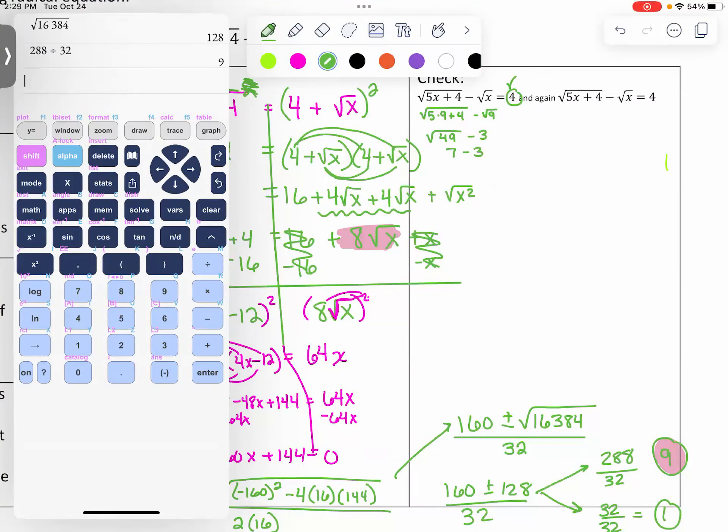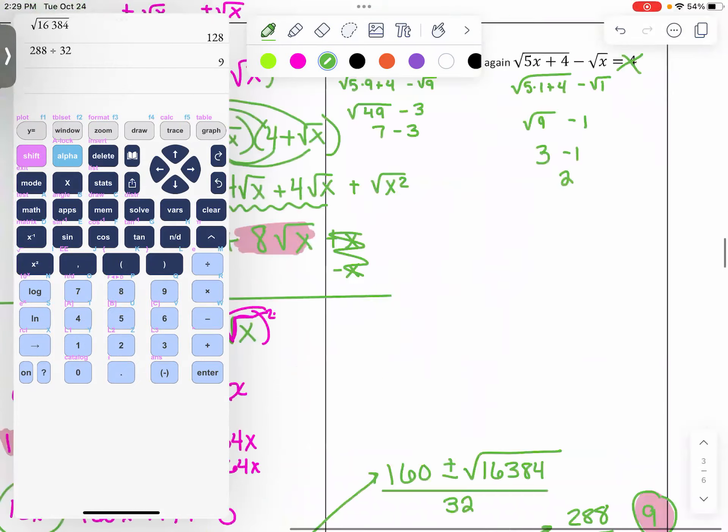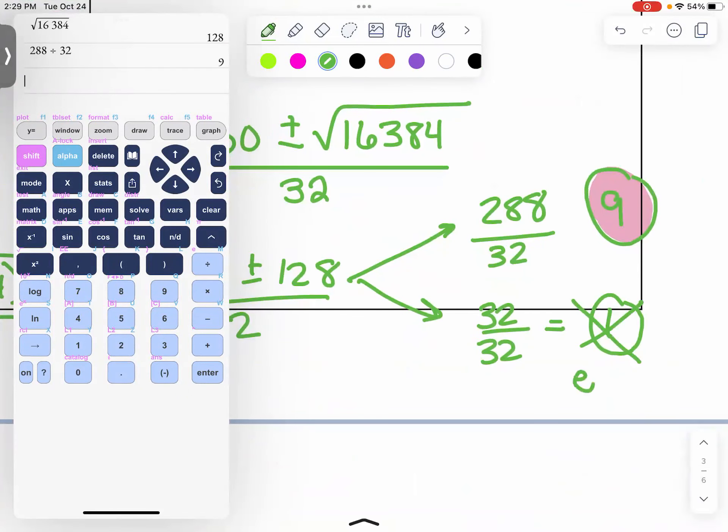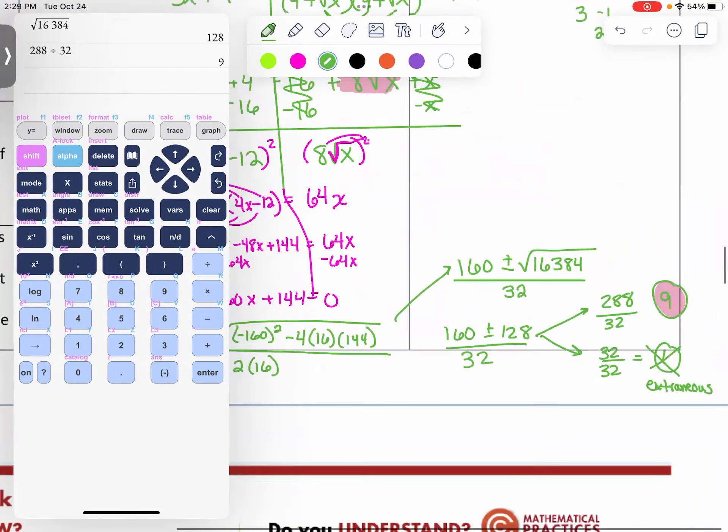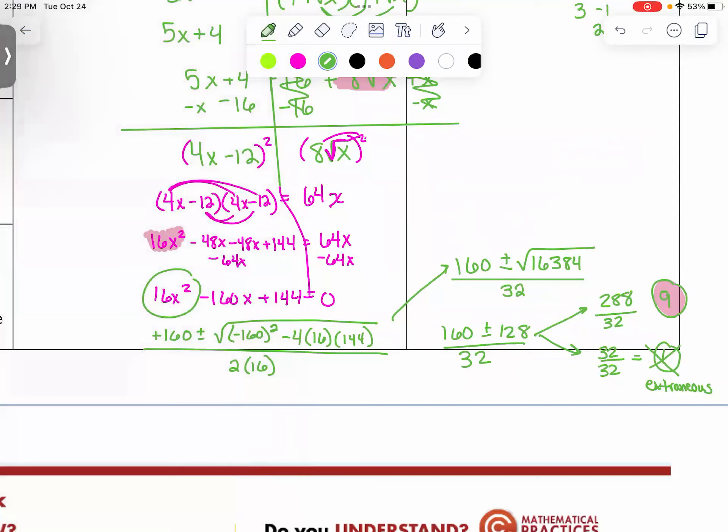And let's check in 1. 5 times 1 is 5. Plus 4 is 9. Which is 3. Minus the square root of, we're checking in 1. So, minus 1 is 2. So, what that means, it's not 4, that it is extraneous. So, we're going to put this over it and we're going to use the word extraneous. Extraneous means you get it as an answer, but it doesn't plug back in. So, it's like not an answer. It's like a sneaky answer. Does that make sense?